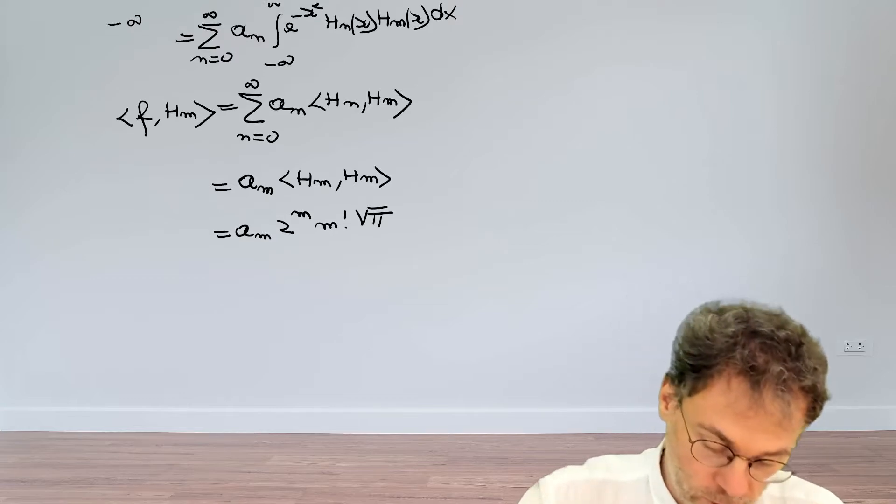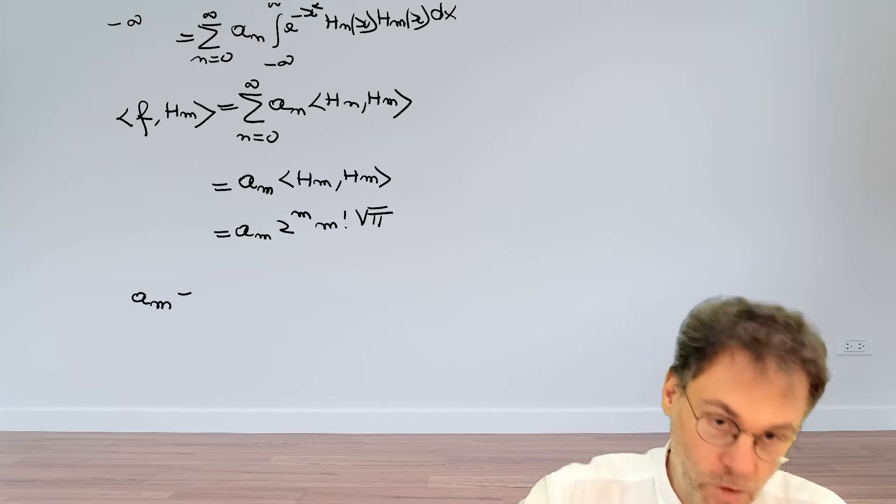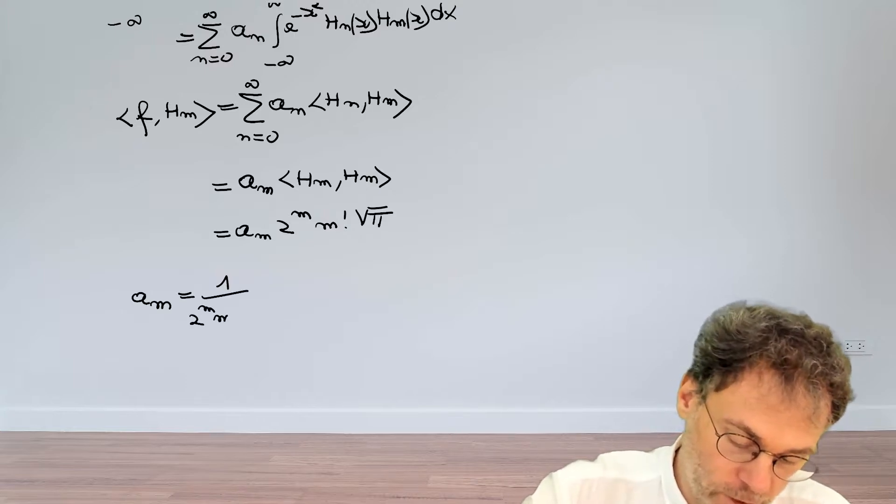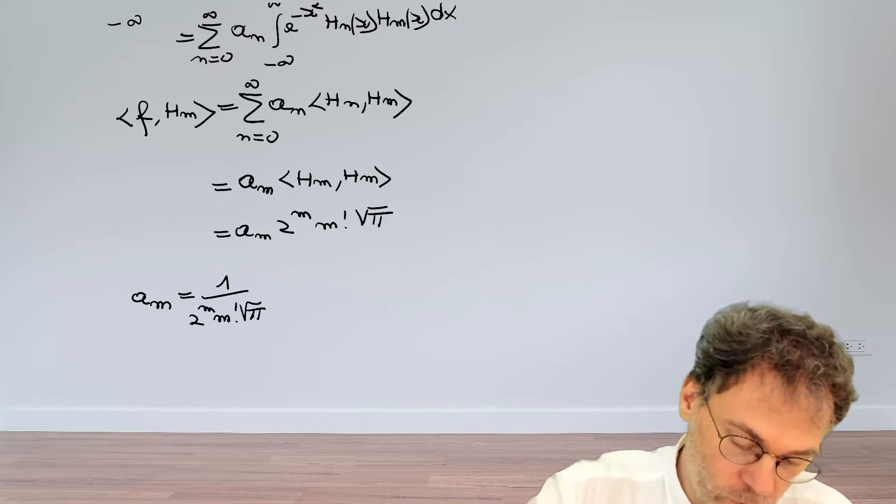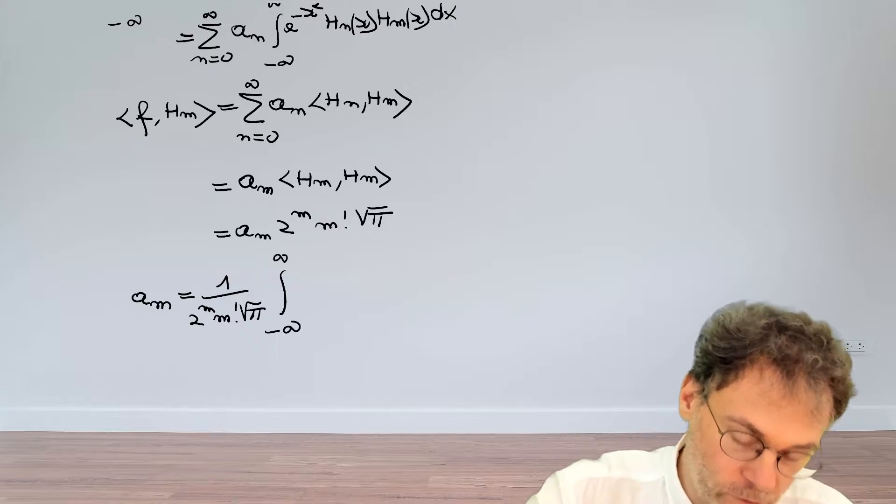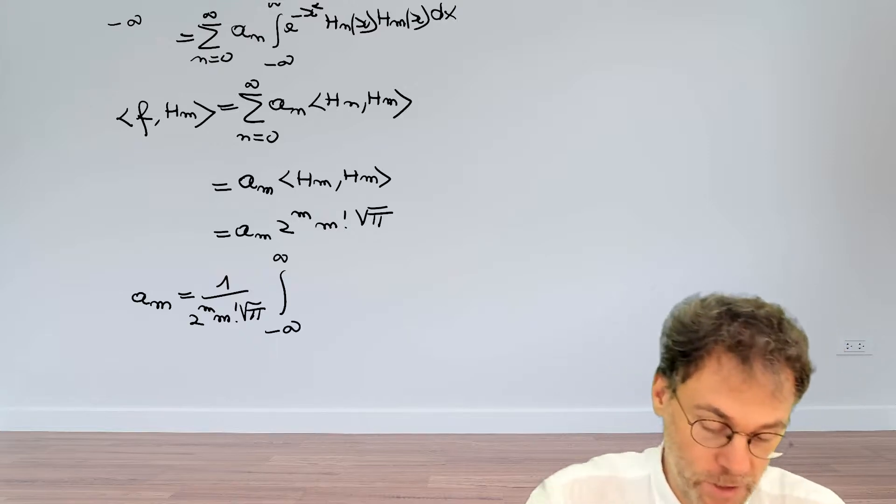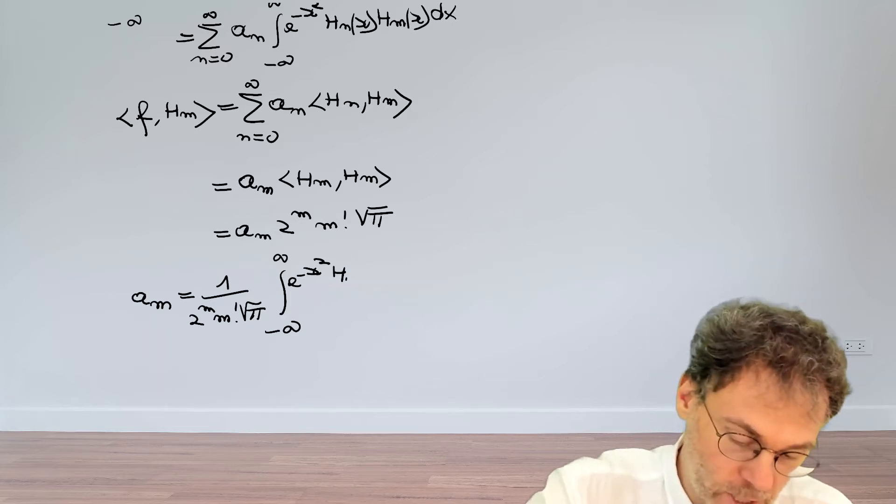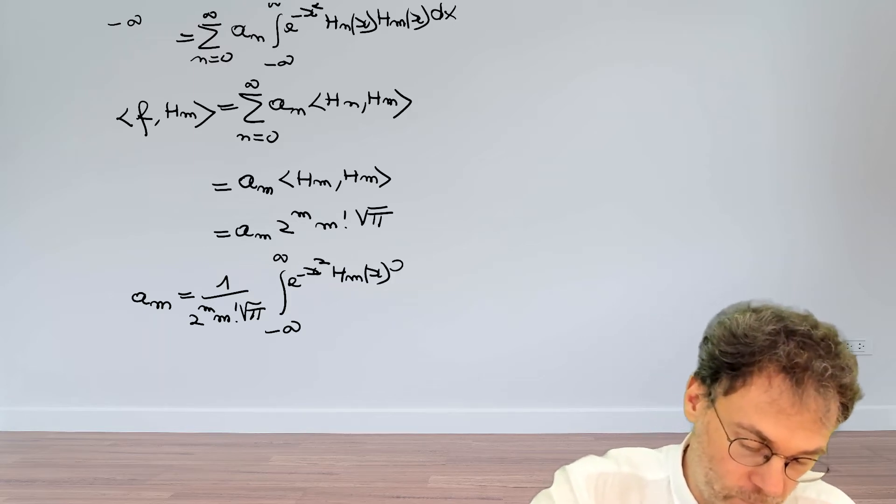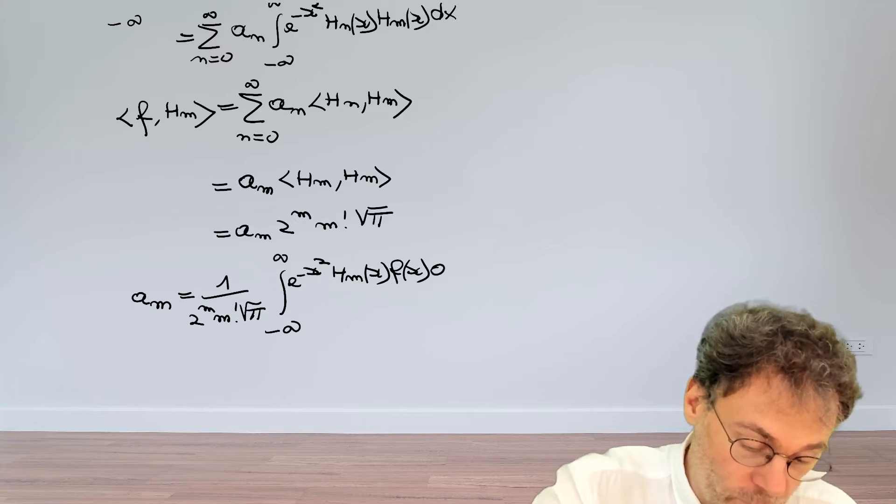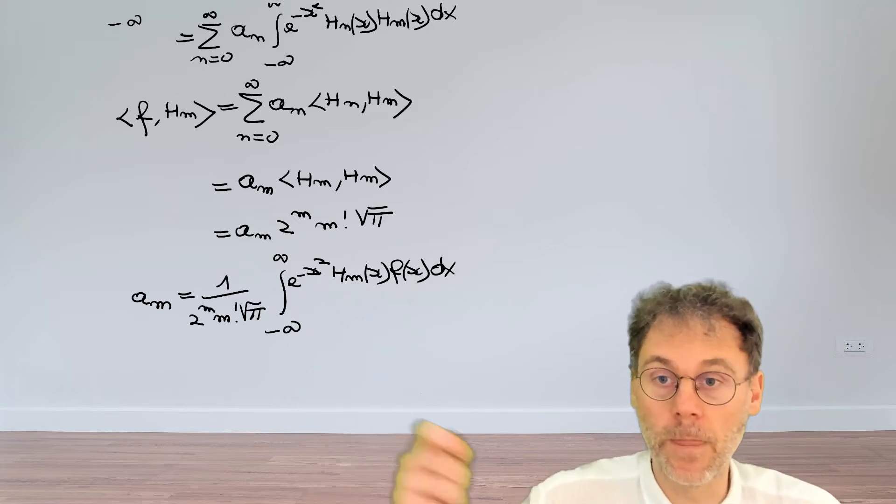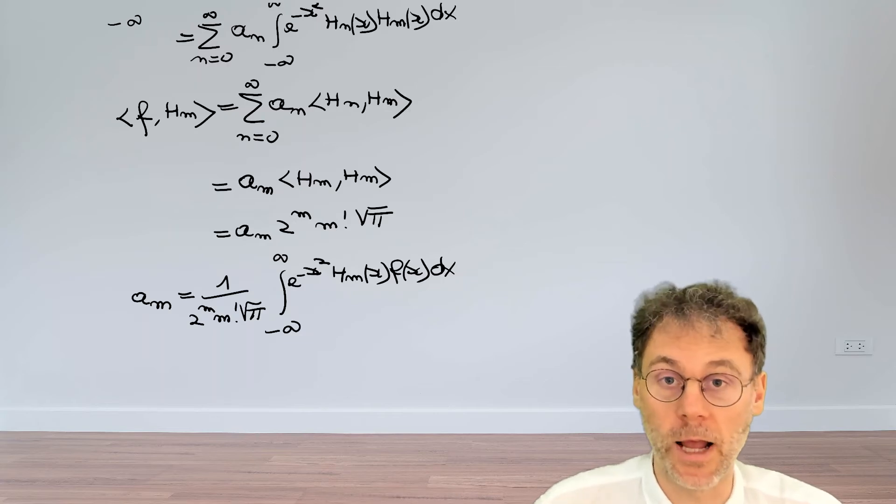So finally we can derive the expansion coefficient as being 1/(2^m m! √π) times the integral from minus infinity to plus infinity of e^(-x²) H_m(x) f(x) dx. And if f(x) is a known function you can just calculate that integral either numerically or analytically.